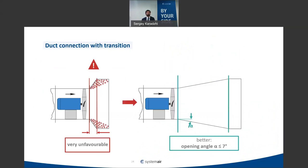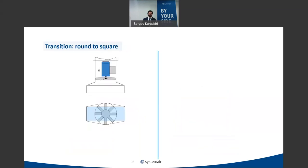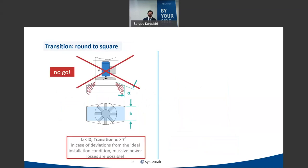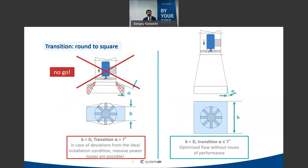It's always better to install a fan with a diffuser having an opening angle of about 7 degrees. The losses in a diffuser as a function of opening angle can be checked in technical books. The same applies for a round-to-square transition: use an opening angle of about 7 degrees and ensure the square cross-section is larger than the fan diameter. Smaller squares are not recommended.